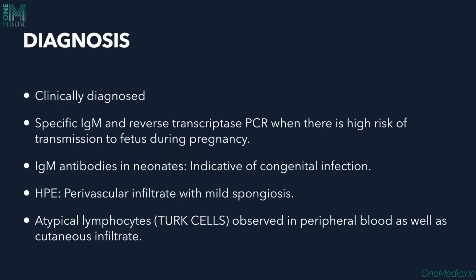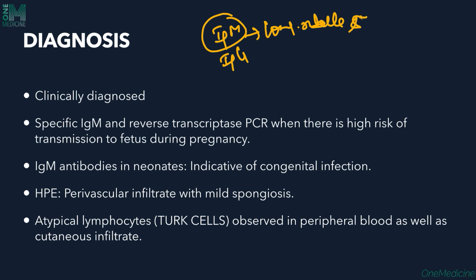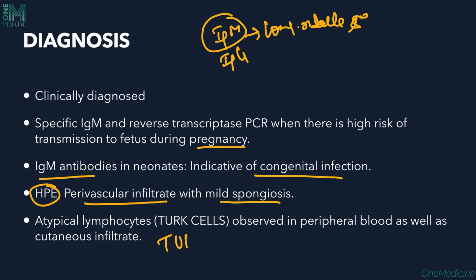Diagnosis is mostly clinical. Serology can be performed: IgM antibodies indicate active infection, while IgG appears after two to three weeks. If IgM persists — meaning only IgM is found even after two to three weeks — this suggests congenital rubella syndrome. Specific IgM or reverse transcriptase PCR can be done, including during pregnancy. Histopathology shows perivascular infiltrate and mild spongiosis, with atypical lymphocytes called TIRC cells seen in the blood and cutaneous infiltrate.